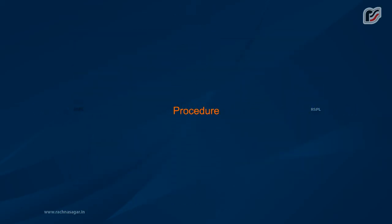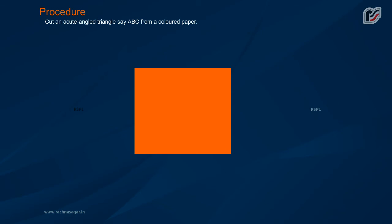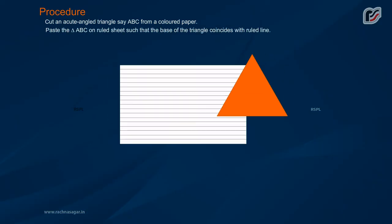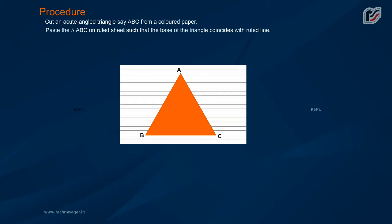Procedure: Cut an Acute Angle Triangle A, B, C from Colored Paper. Paste the triangle ABC on ruled sheet such that the base of the triangle coincides with ruled line.